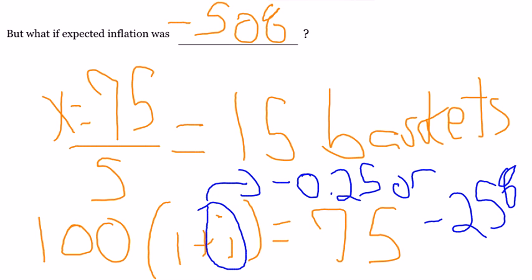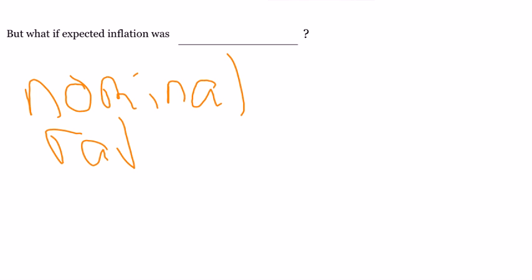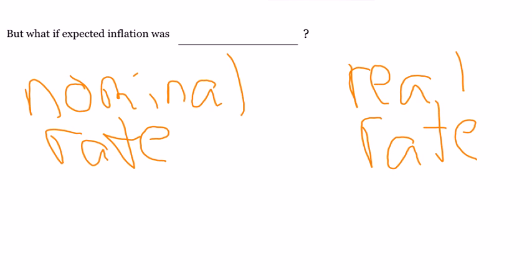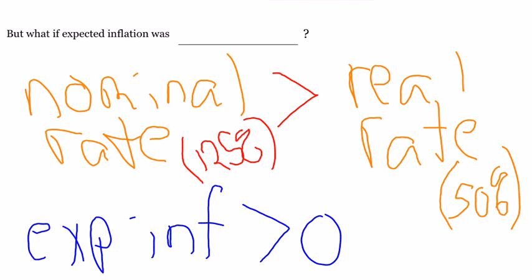So what does all this tell us? Remember, what we want to know is the relationship between a nominal interest rate and a real interest rate. In our example, we wanted a real interest rate of 50%. Well, when we had expected inflation that was greater than zero, then our nominal rate should have been greater than the real interest rate. And specifically, the nominal interest rate was 125% compared to the real interest rate of 50%.